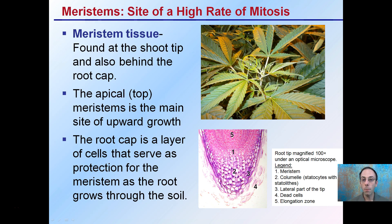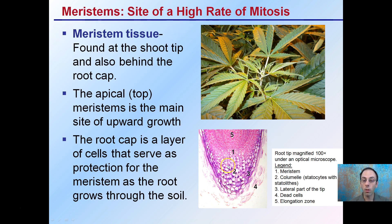Meristematic tissue is found at the shoot tip — this is the growing tip here — and also just behind the root caps. This is a root, a microscopic view of the root. These meristems are a site of high rate of mitosis. The apical meristem, the very top meristem, is a site of growth because that's where the plant can be growing upward. The root area is also going to be a high rate of cell division, serving as that root growing through the soil to increase the plant's ability to absorb water and nutrients. The root cap is just a protective structure that pushes through the soil, so if it comes in contact with rocks or other debris, it's not damaging this very sensitive and important area of mitosis.